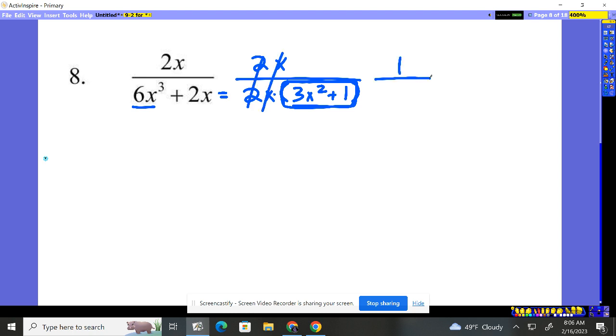You're left with 1 up top, and in the bottom, 3x squared plus 1. That's what it simplifies to.